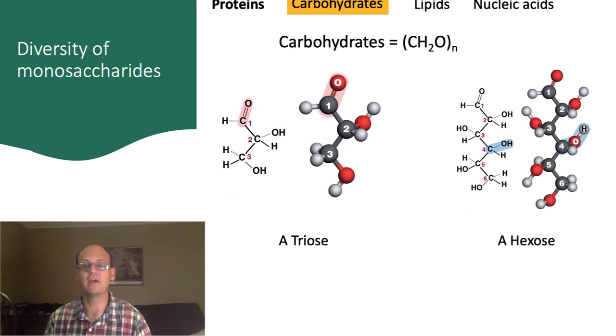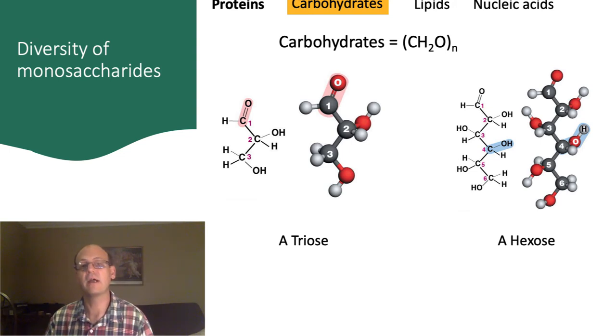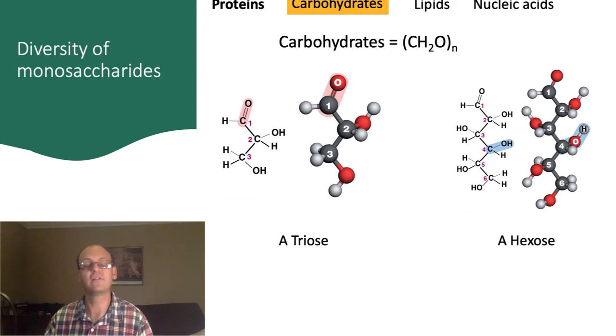One of the first ways in which carbohydrates can vary is the number of carbon atoms in the backbone. On the left, there's a triose with three carbon atoms, and on the right, there's a hexose with six carbons.